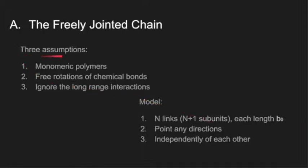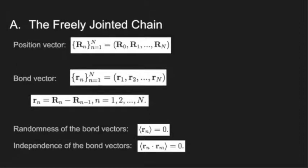In this model, we have three assumptions: we consider the polymer is a monomeric polymer, the rotations of chemical bonds are totally free, and we ignore the long range interactions between them. Here, we need to address that 'long' means the distance along the chain. From these three assumptions, we can build a model. In order to figure out the actual size of the polymer, we need to know the conformation of this chain. The conformation is represented by the position vector R_n, which tells us where the subunits are, or the bond vector r_n, which tells us where the bonds are. The bond vectors can be obtained from the position vectors.